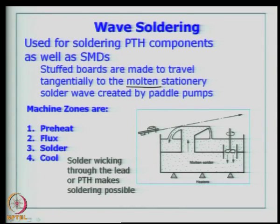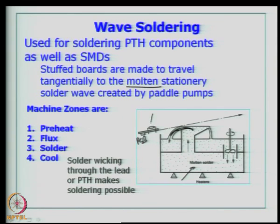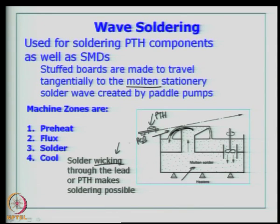A wave soldering equipment has molten solder kept molten by heaters, and a paddle pump generates a wave. Your PCB with through-hole components inserted is moved on a belt tangentially to the wave. The wave touches the leads of through-hole components at the solder side of the board, and using a solder wicking process through the plated through hole, soldering is established and an electrical connection is made.